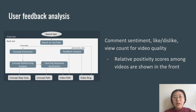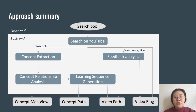Furthermore, for the video rings and their color, we collect comments under each video and use text analysis to calculate the average sentiment of comments. The sentiment score and like counts are used to calculate the quality of videos based on previous audience feedback. In general, we apply different NLP techniques to analyze different corpora from YouTube and generate the concept map and corresponding learning recommendations.